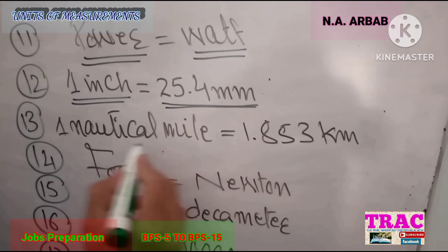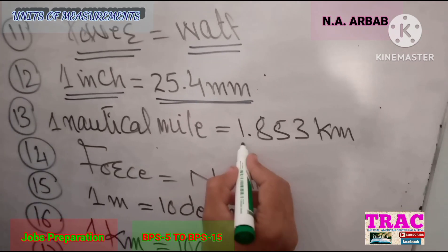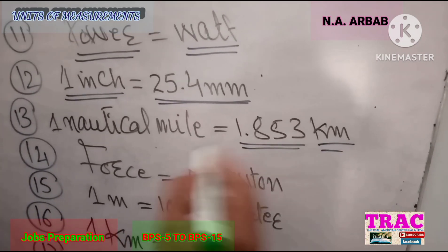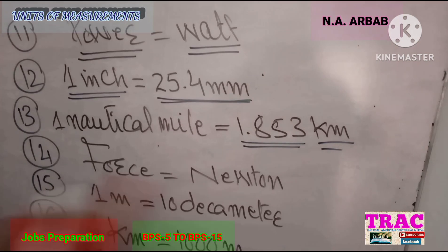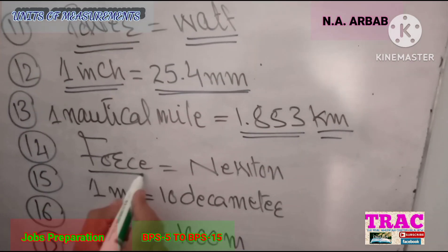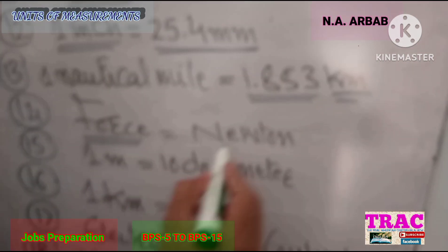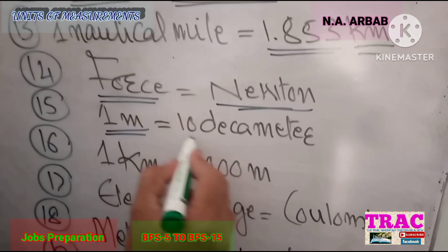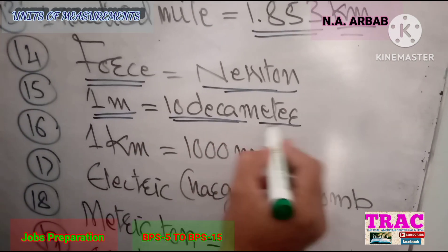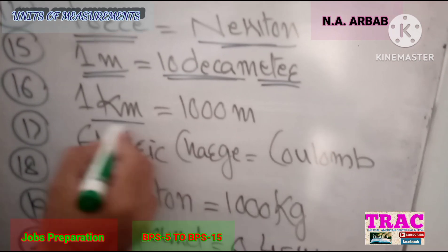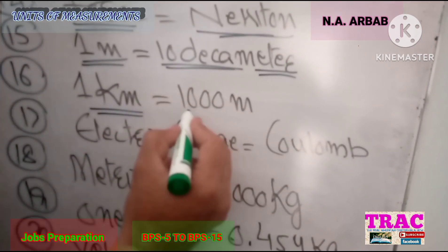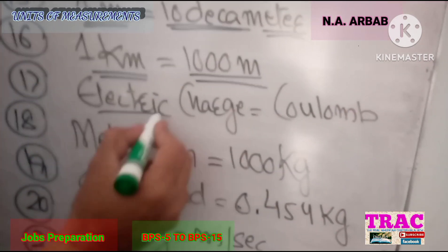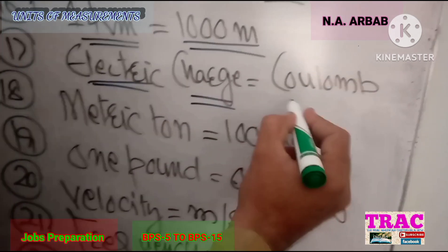Number 13: 1 nautical mile is equal to 1.854 km. Number 14: the unit of force is Newton. Number 15: 1 meter is equal to 10 dm. Number 16: 1 km is equal to 1000 m.